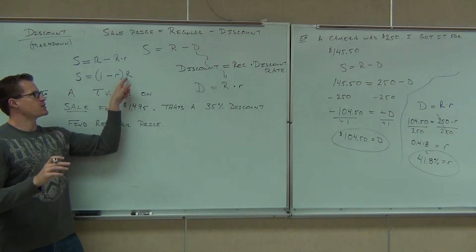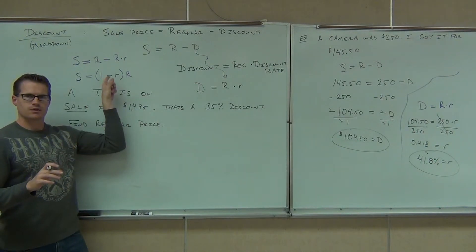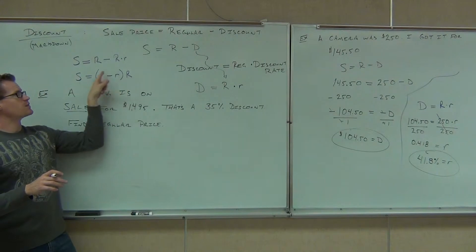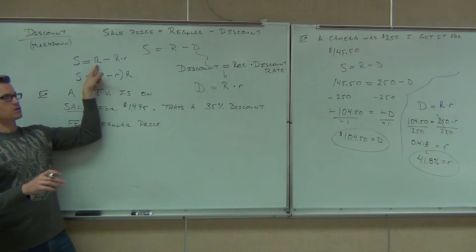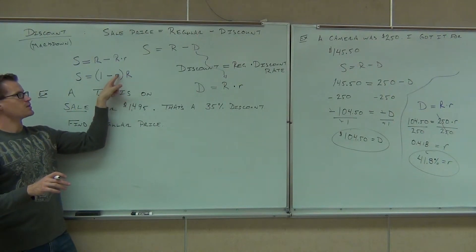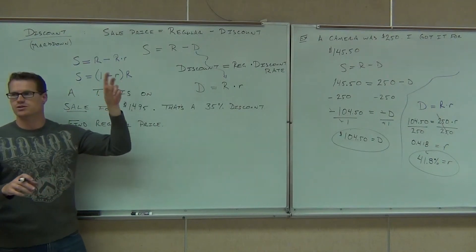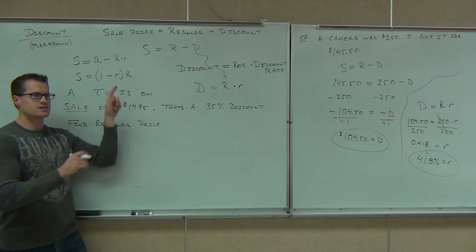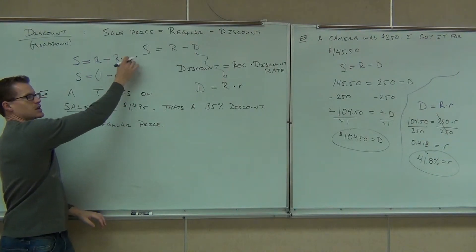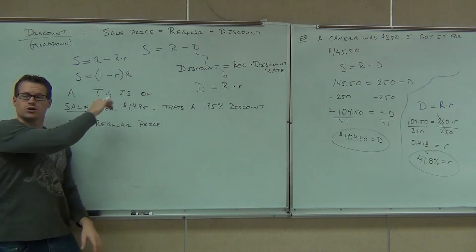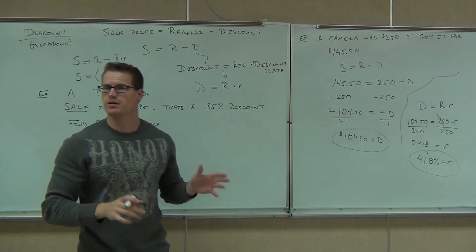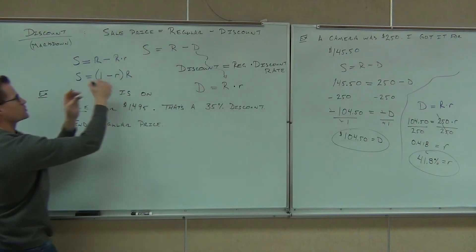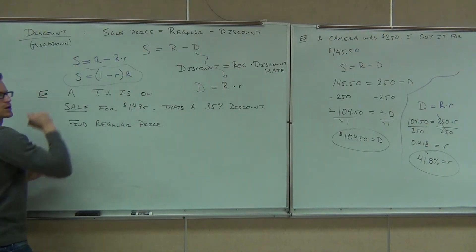Can you distribute this back in? Check out what you get. What's big R times 1? That's just R. What's big R times little r? It's R times little r — they're two different things. Do you guys see that this is the same thing? It is the same. If you distribute, you'll get the same thing back. Notice how we changed two formulas with two R's into one formula with one R — that's going to allow us to solve this problem.